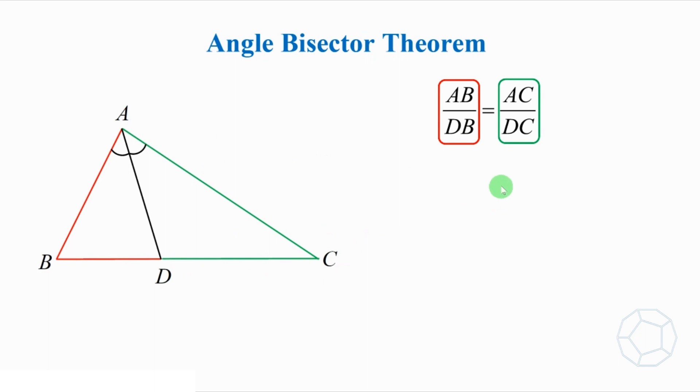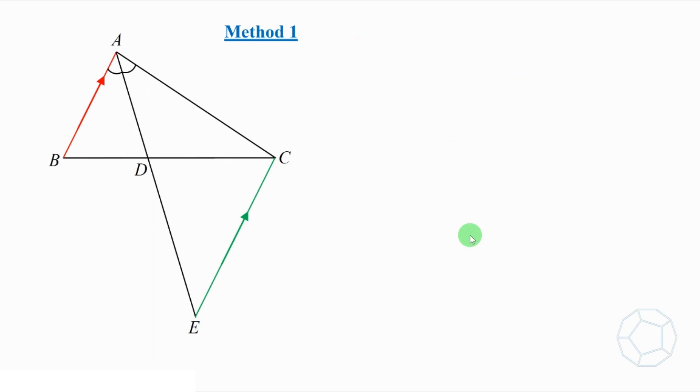As we come across ratio of sides, the first idea is to use similar triangles. Let's look at the three reasons to prove that: AAA, three sides proportional, and ratio of two sides included angle. Because we want to get equal ratio of sides as the result, therefore it shall not be the reason to prove similar triangles. That means we'll have to use AAA.